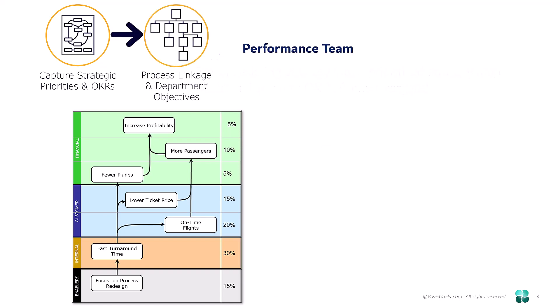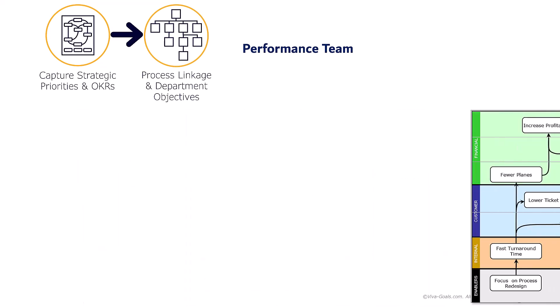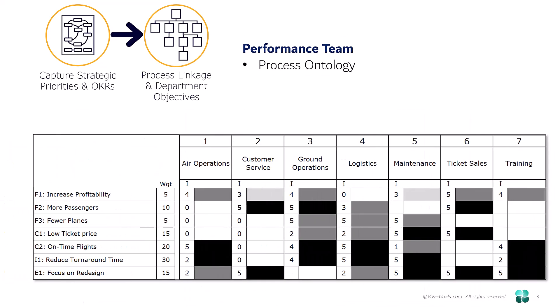Step two is what we call the process or department cascade, or connection drill-down. What we do is what we call an ontology — ontology means organizing philosophy. What we do is take your strategic objectives on the left, list your core processes across the top, and score the impact of each process on each objective.